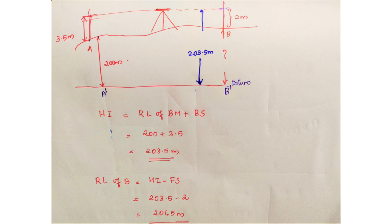The reduced level of B equals the height of the instrument minus the foresight reading. So: HI = 203.5 meters; reduced level of B = 203.5 minus 2 = 201.5 meters. The formula is: Reduced Level of point = Height of Instrument minus foresight.